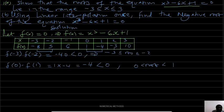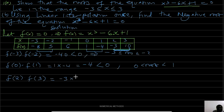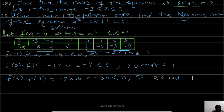There is another sign change between 2 and 3: f(2) × f(3) = -3 × 10 = -30, which is less than 0, meaning a root exists between 2 and 3.